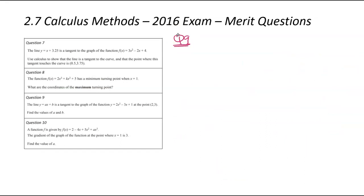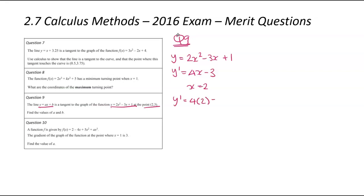We are now looking at question number 9. We've got the line ax plus b as the tangent to the function at the point (2, 3). Note that a is the gradient and b is the constant. I'll write down the original function: y equals 2x squared minus 3x plus 1, then differentiate: y' equals 4x minus 3. Substituting x equals 2 to find the gradient: y' equals 4 times 2 minus 3 equals 8 minus 3 equals 5. So a equals 5.